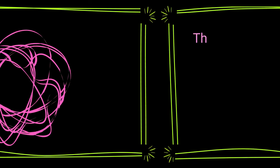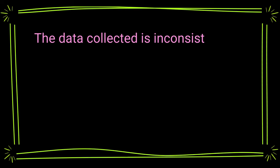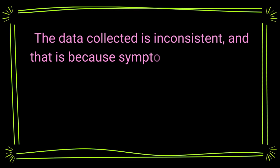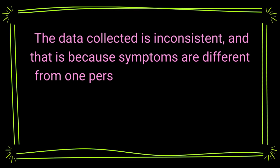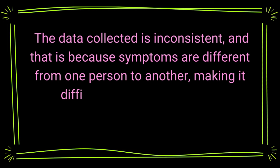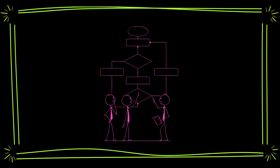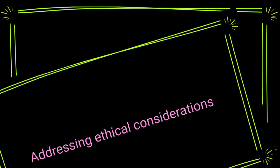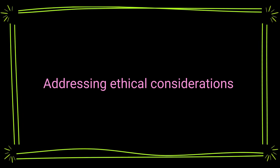AI implementation in Parkinson's treatment is challenging because the data collected is inconsistent, and that is because symptoms are different from one person to another, making it difficult to ensure accuracy. Moreover, AI algorithms and integrating AI tools into clinical practice require validation, regulatory approvals, and addressing ethical considerations.